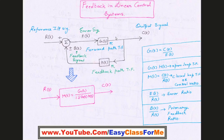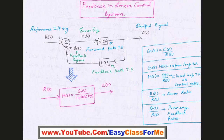We have a closed-loop system here and there are various terms written here. You might probably be aware of all these terms from your control systems course. But to understand phase-locked loop more effectively, let us revisit them. You have this input signal or the reference signal R(s), and this is fed into G(s), the forward path transfer function, and you are getting some output out of it.